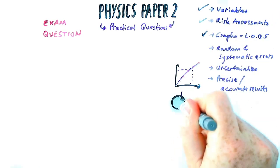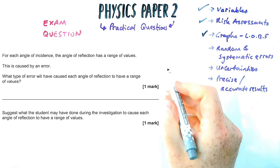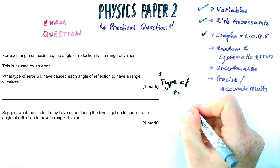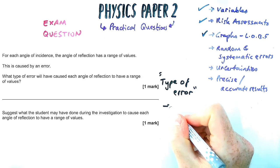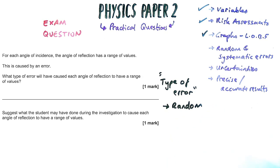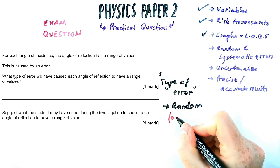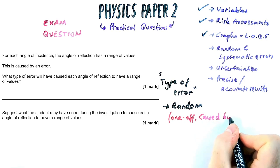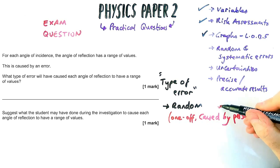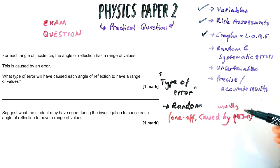So that's graphs done. Next, we're going to look at random and systematic errors, which as I mentioned at the start come up a lot. So whenever you see a question about types of error, a type of error is either going to be random or systematic, and this question is about the reflection or refraction practical in separate science. So a random error is the one here that it says will cause each angle of reflection to have a range of values.